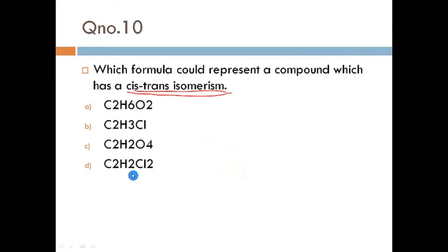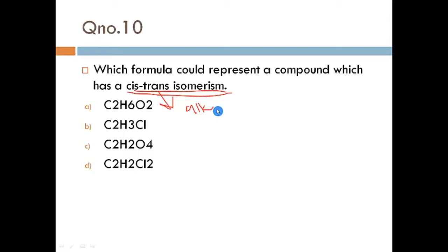Next question: which formula could represent a compound that shows cis-trans isomerism? As we know, cis-trans isomerism occurs in alkenes and cycloalkenes. Since there are no cyclic compounds in the options, we are looking for an alkene. We need to identify which formula corresponds to an alkene.